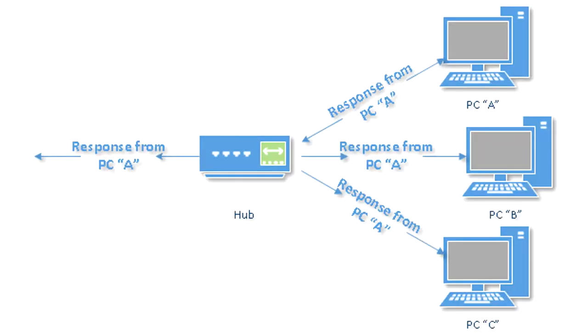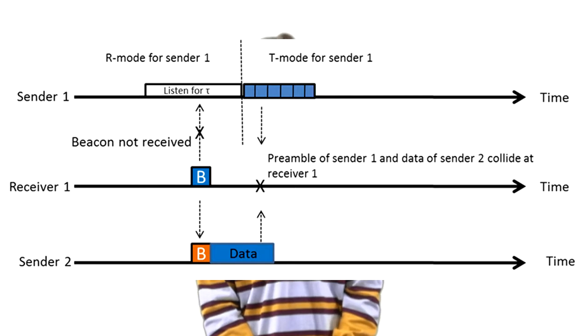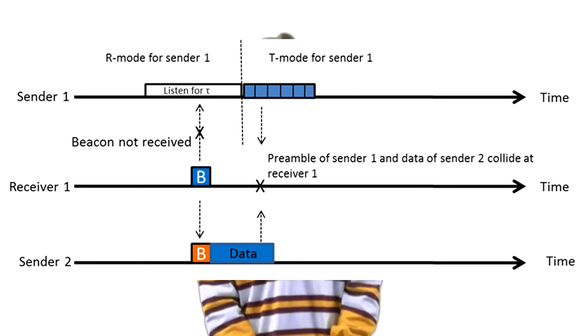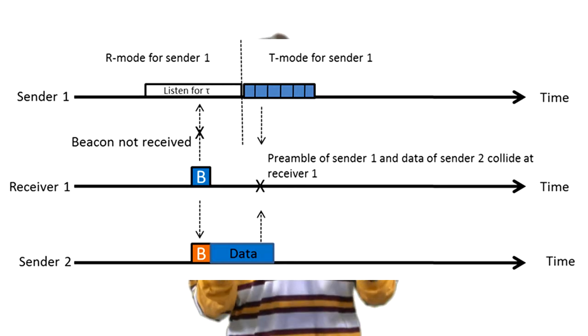While hubs are considered inexpensive communications hardware technology, this is due to numerous pitfalls. One major disadvantage of a hub is that of data security. As all data is sent to all devices connected to the hub, certain computers may receive data which is unintended for them. Due to this wide-scale sharing of data, data collisions are also a considerable factor which must be taken into consideration while operating a hub, as this can lead to errors within data transmission or the manner in which certain devices operate.